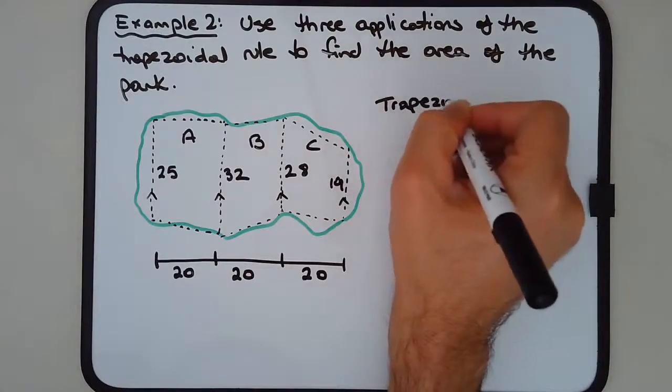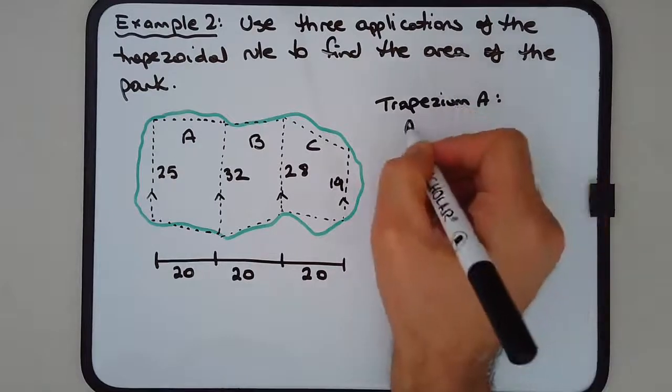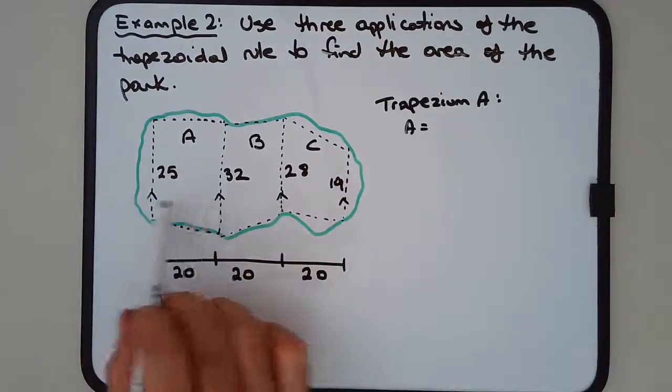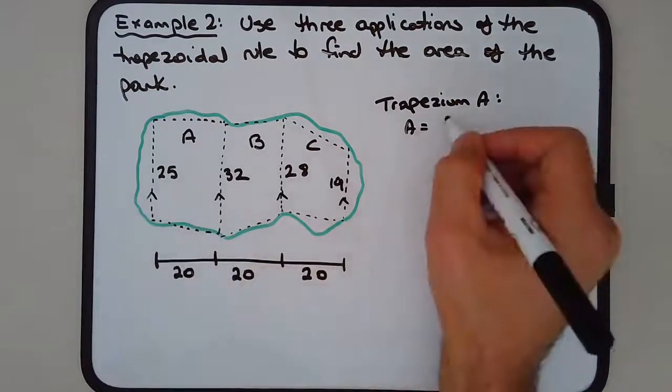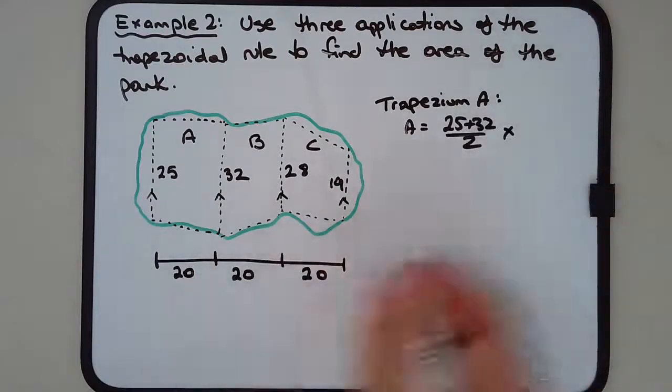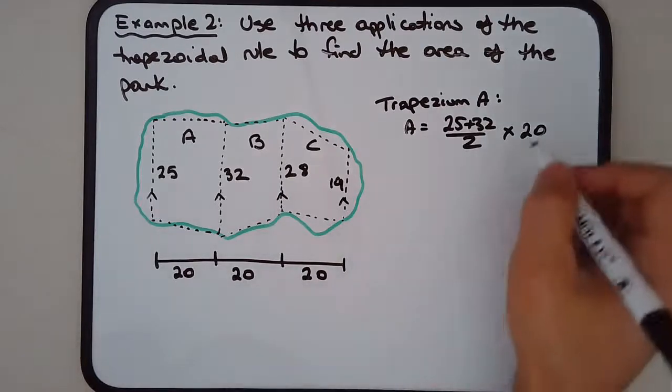Trapezium A: area equals the average of the parallel lines, 25 plus 32 over 2, and we multiply that by the height or width of the trapezium. That's 25 plus 32 over 2 multiplied by 20, and we get 570.